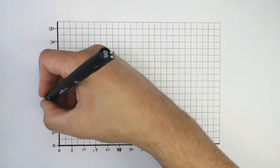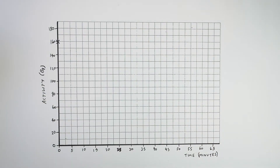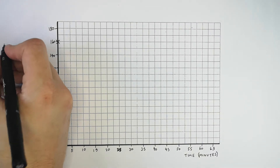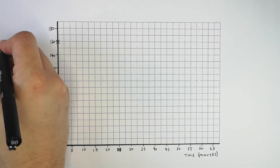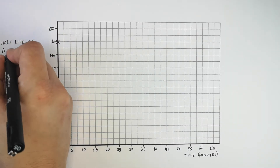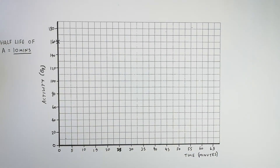The unit for activity is Becquerels, and the unit for time in this case is going to be minutes. For half-life, the half-life time can be years, minutes, seconds, or hours. So the half-life of this radioactive sample is going to be 10 minutes, which means every 10 minutes the activity is going to decrease by half.